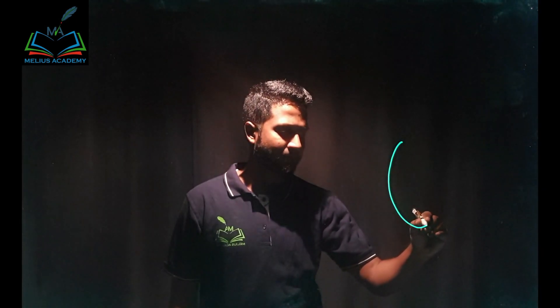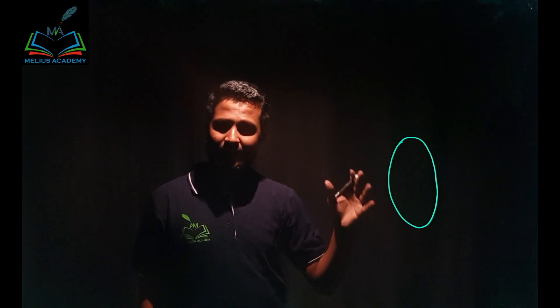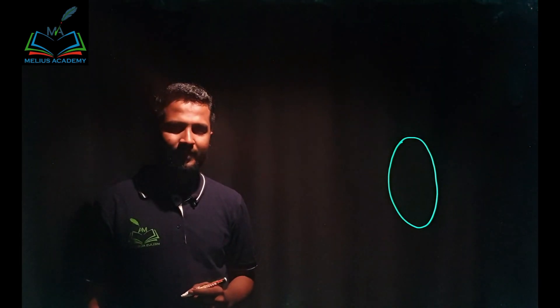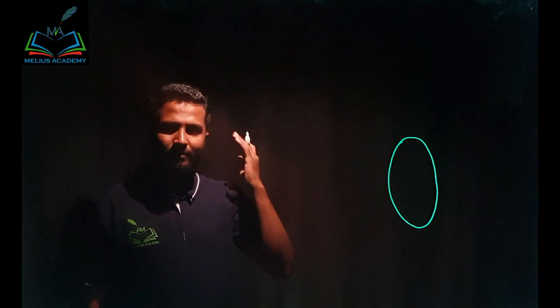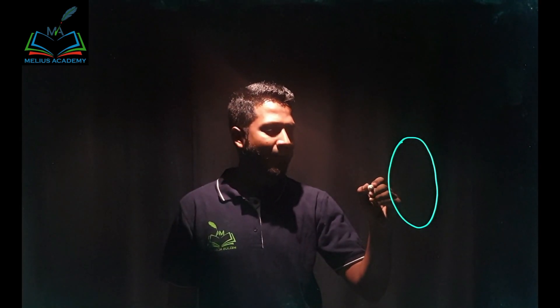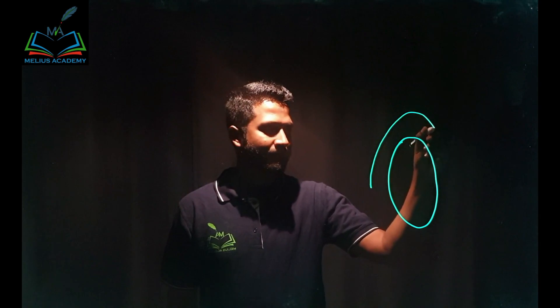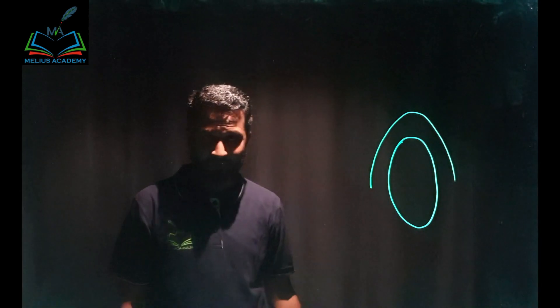To draw this diagram, the very first thing you need to do is draw one egg-shaped structure. Imagine a person goes to Tirupati, or a Haji going for Haj — they go bald. After going bald, this person starts wearing a cap. We'll put a cap on the head.